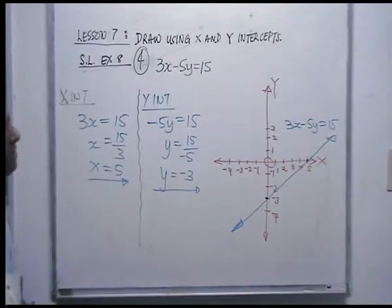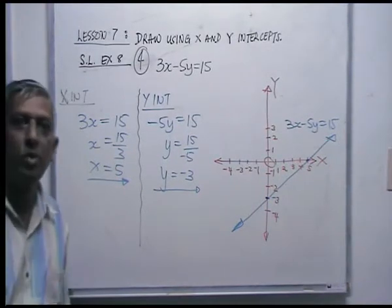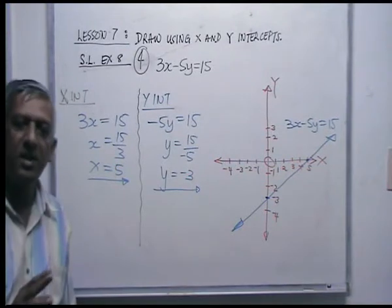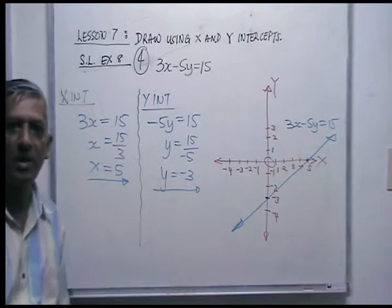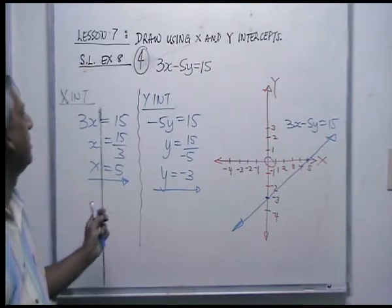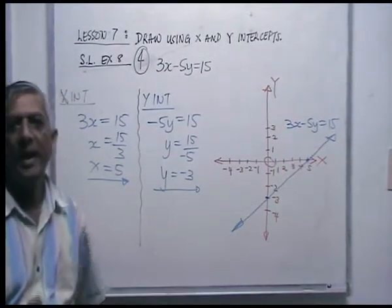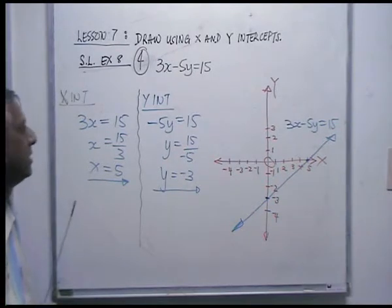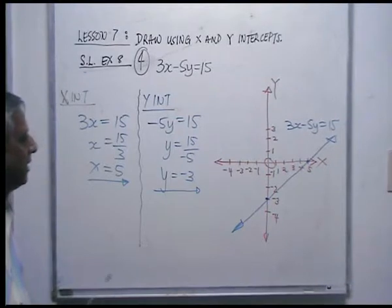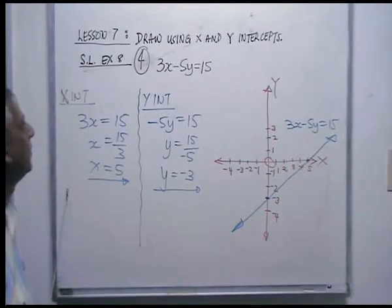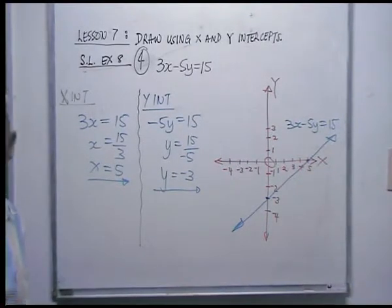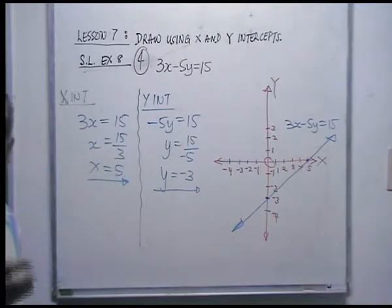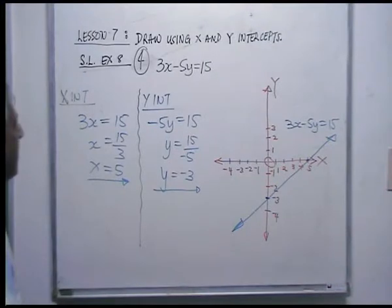That brings us to the end of Lesson 7, which is drawing straight lines using x-intercept and y-intercept. In the examination, you must know both methods, because there are certain graphs you cannot draw using only x-intercept and y-intercept. Most of the time you'll use intercepts to draw graphs quickly and save time, but you must know both methods. In Lesson 8, we'll do more examples using both straight-line intercepts and ordered pairs.